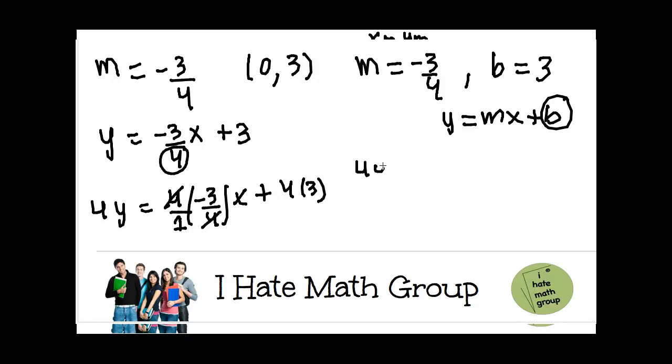So I have 4y equals negative 3x plus 12. Now I can go ahead and move this negative 3x to the left, which is going to be 3x plus 4y equals 12.